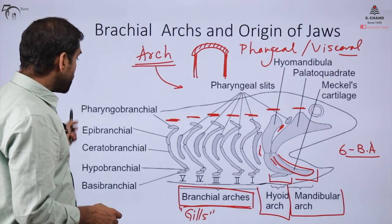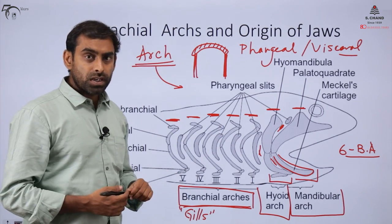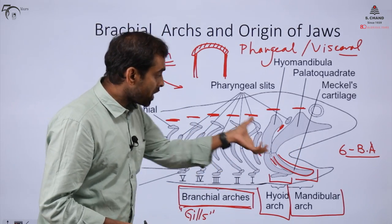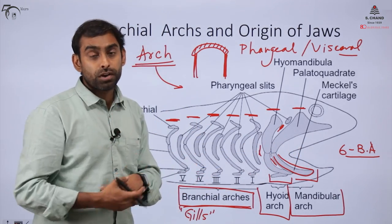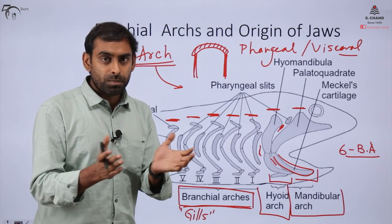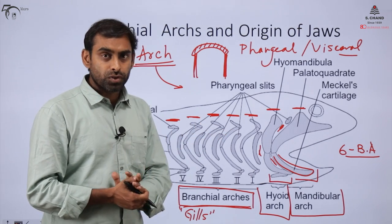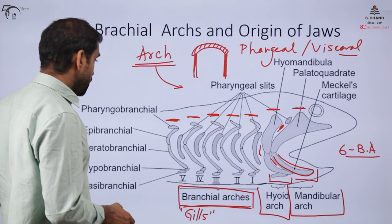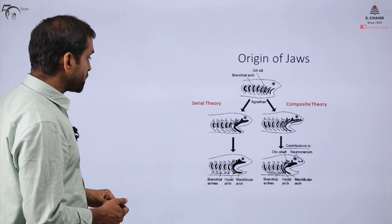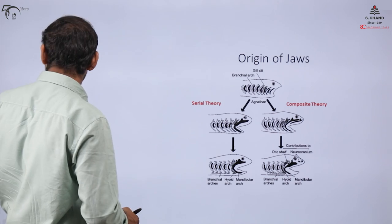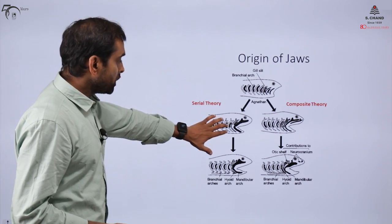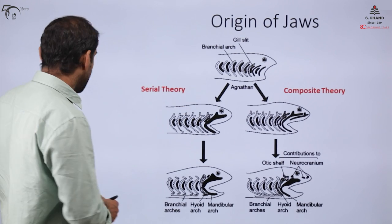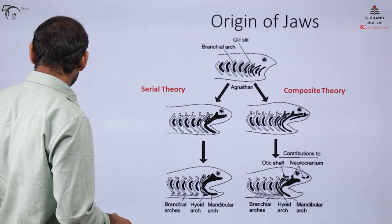Now let's look at the theories proposed to explain — from an evolutionary point of view — how these arches gradually modified into skin bones, skull bones, and jaw bones. Two theories have been proposed: the Serial Theory and the Composite Theory.